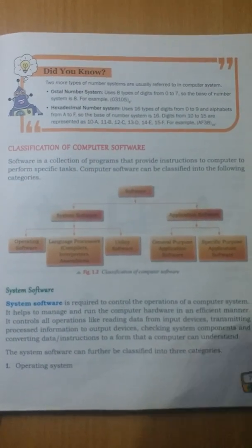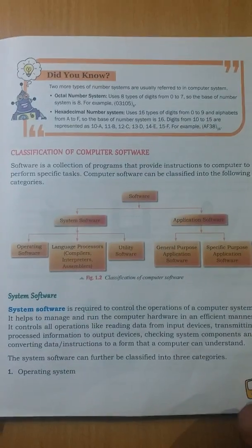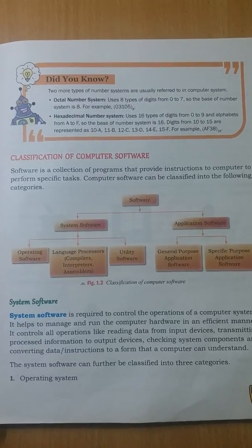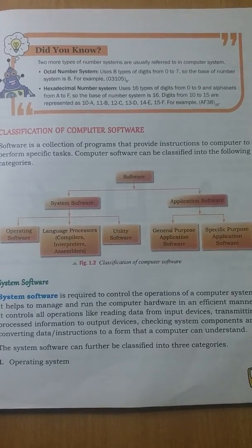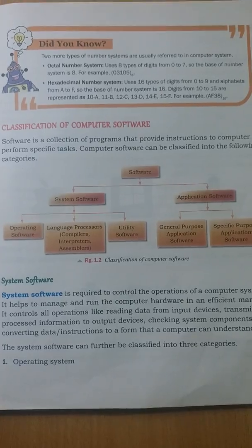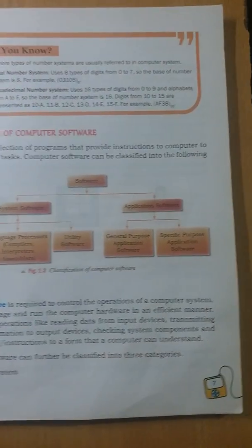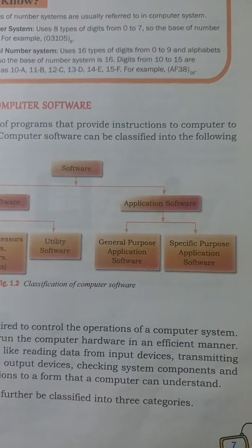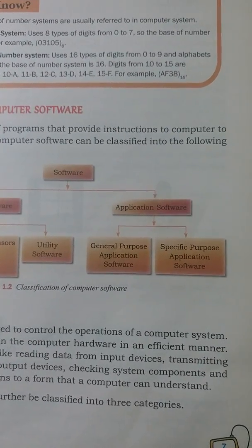Computers have various types of software. The first one is known as system software and another one is application software. System software is further divided into three categories: operating system, language processors, and utility software. Application software is further classified into two categories: general purpose application software and specific purpose application software.